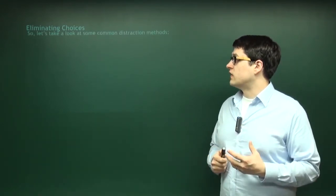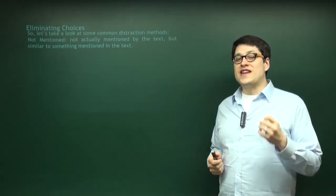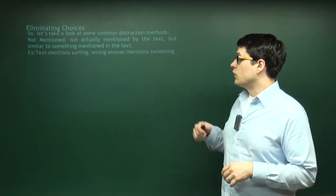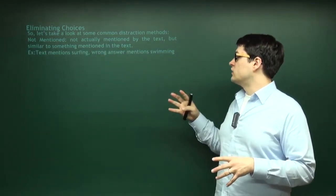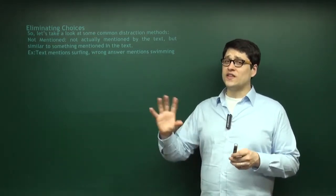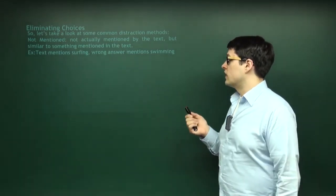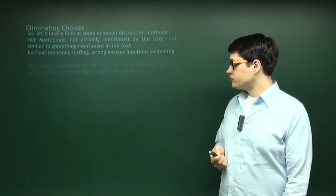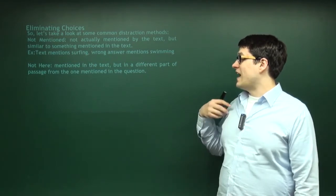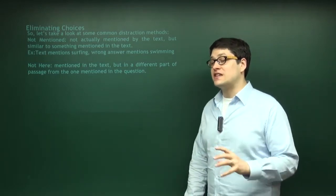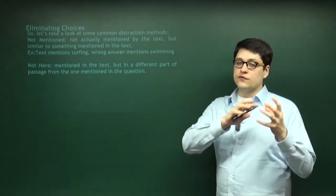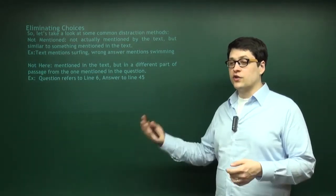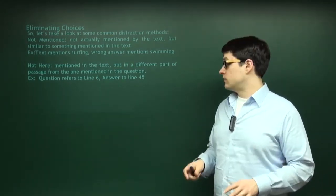One common distraction method: the answer choice was not mentioned in the text — it's literally not there. For example, the text mentions surfing and the wrong answer choice mentions swimming. Sometimes it's even more absurd — the text mentions surfing and the wrong answer mentions riding sharks or hiking on volcanoes. Another type: the topic is mentioned in the text, but in a different part of the passage. The question refers to line six, but the answer choice refers to line 45 where something else is mentioned — a 'not here' type answer.